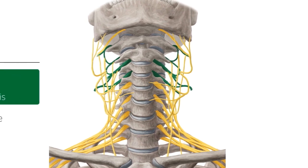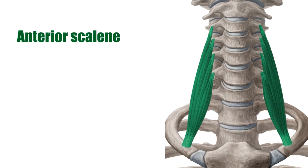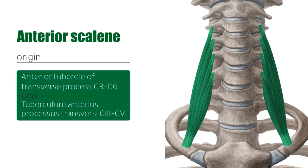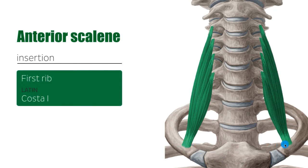Now let's talk about the first scalene muscles you see here. These are the two anterior scalene muscles, one on each side of your neck. In terms of origin point, they originate from the anterior tubercle of the transverse processes of C3 all the way to C6, the cervical vertebrae. The muscle then runs caudally to insert at the first rib — specifically at a tubercle known as the scalene tubercle of the first rib.